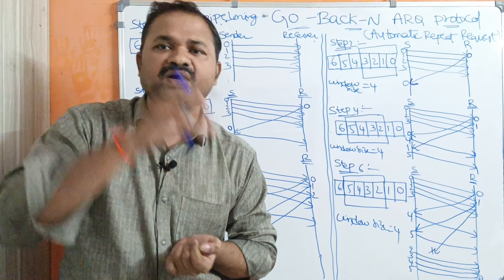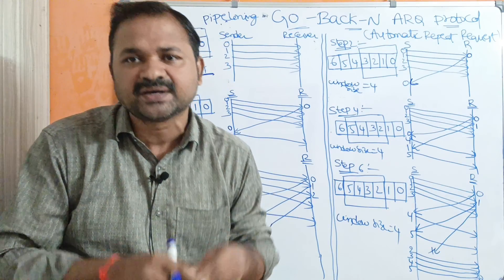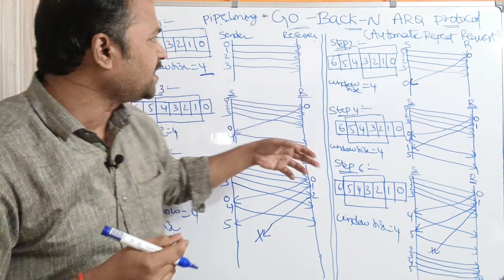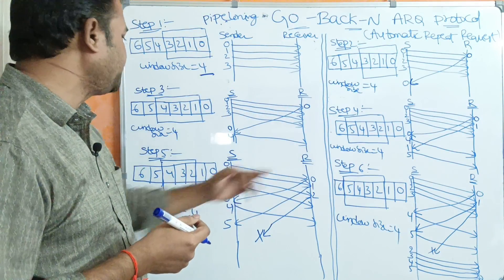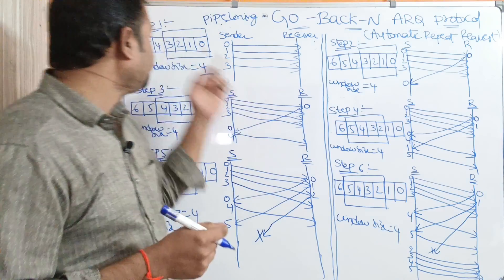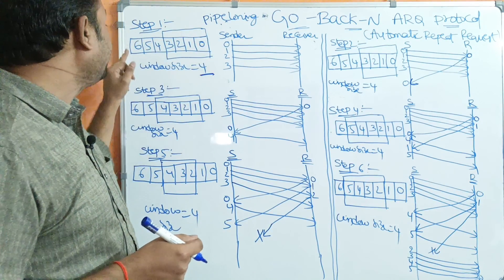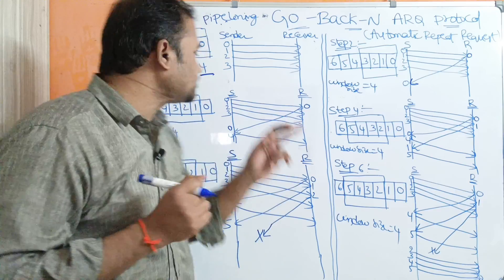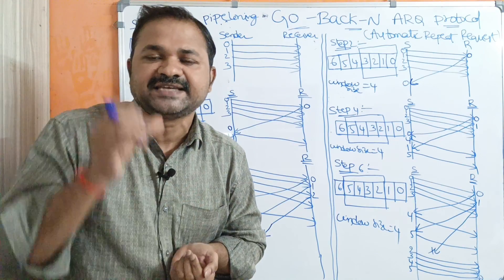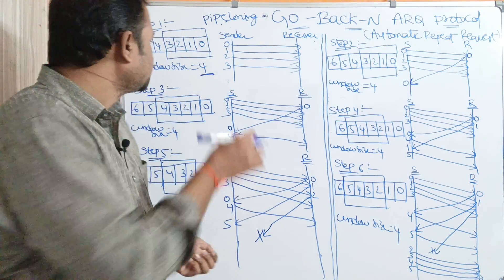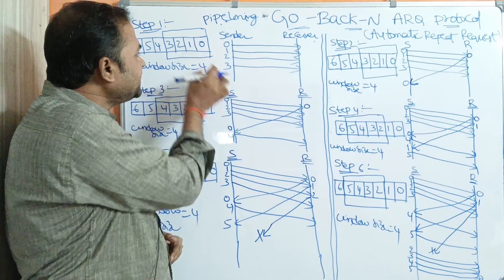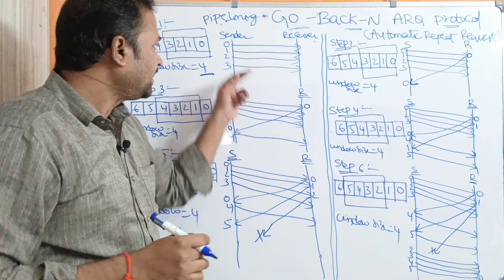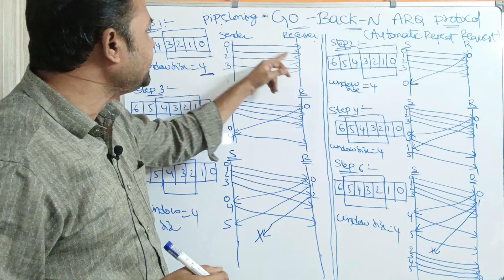Now let us see the Go-Back-N ARQ protocol with an example. In step one, the sender wants to send seven frames to the receiver, from frame zero to frame six. Let us assume the sender window size is four, so at a time the sender can send four frames to the receiver. The window contains four frames, from zero to three. The sender sends these four frames to the receiver.